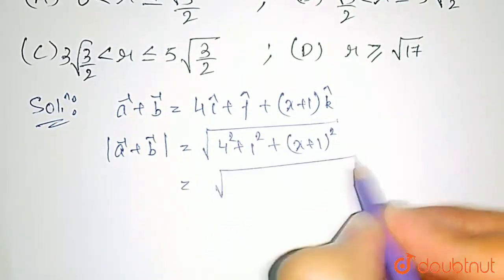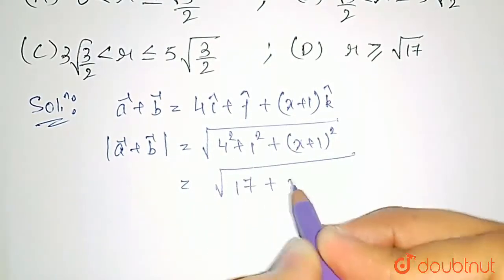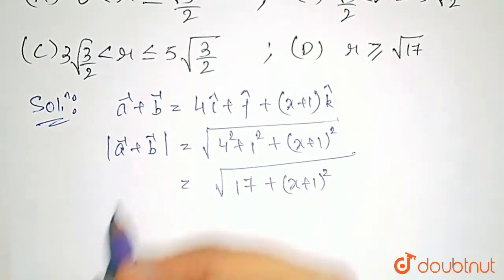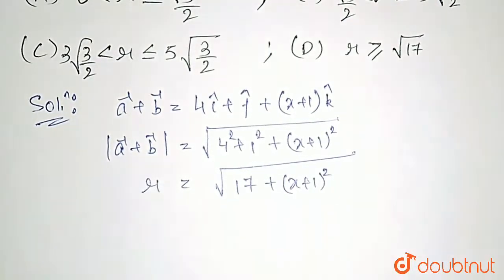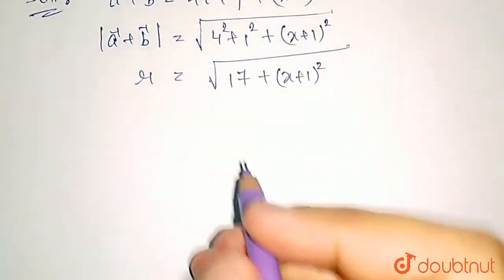This equals the square root of 16 plus 1, which is 17, plus (x plus 1) whole squared. The magnitude of a plus b is given as r. So we need to find the range of r.